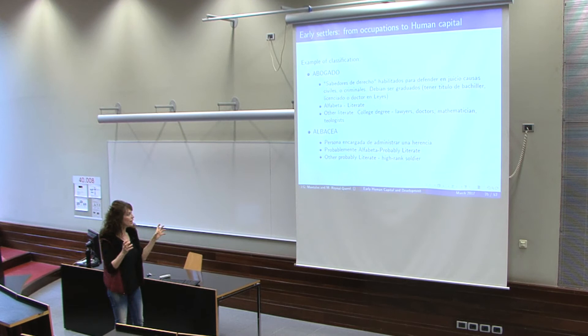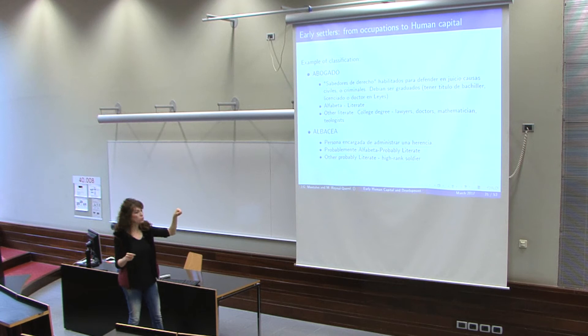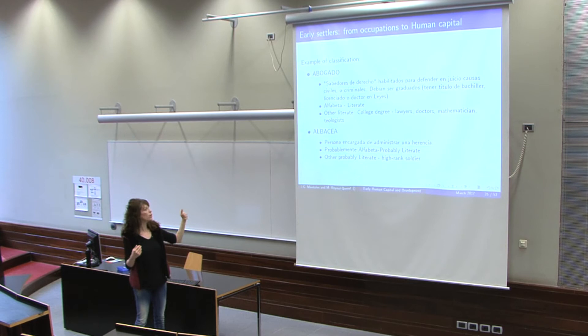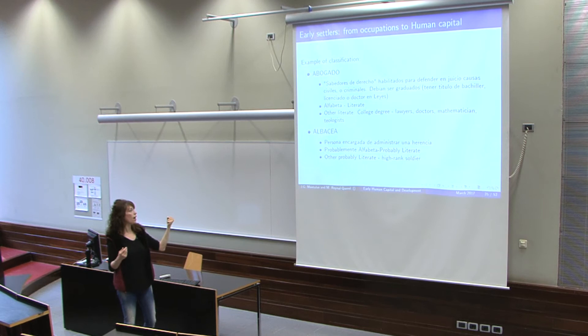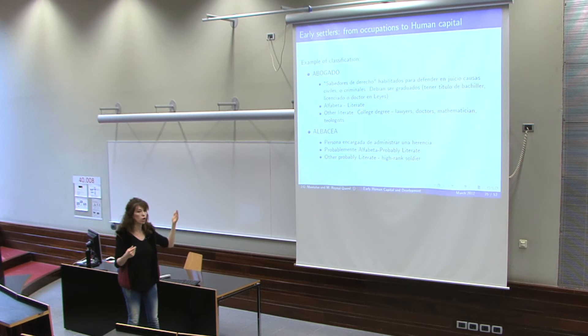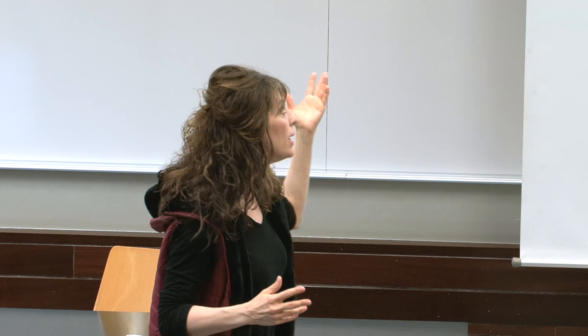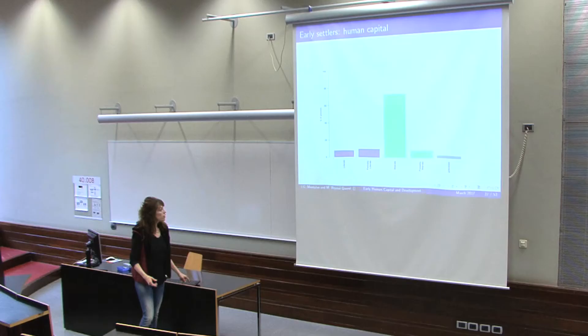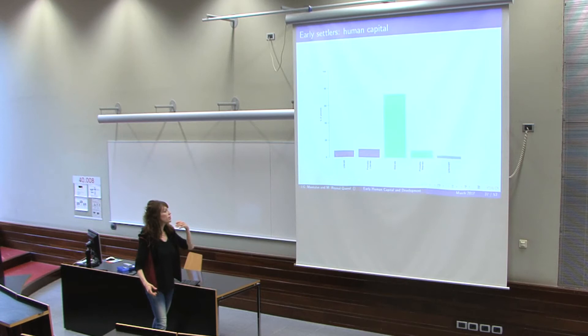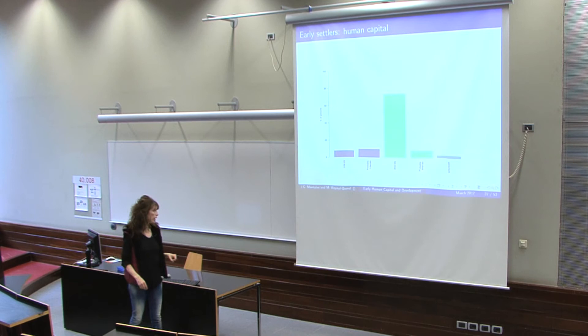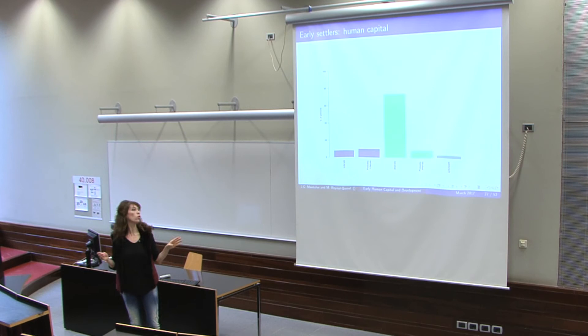At the highest level we have people like scribes, lawyers with college degrees, doctors, mathematicians, and theologians. The second level includes, for example, persons in charge of managing an inheritance — probably literate but not at the college-degree level. Then we have people who needed to navigate a small boat — they needed some knowledge but we are unsure if literate, so we call them probably illiterate. Construction workers and similar fall in the lowest category. The majority were illiterate, but there is still a significant proportion of literate and probably literate people, and importantly they are not equally distributed across the 228 destination points — in more than 100 of those destinations, the majority of settlers were literate.